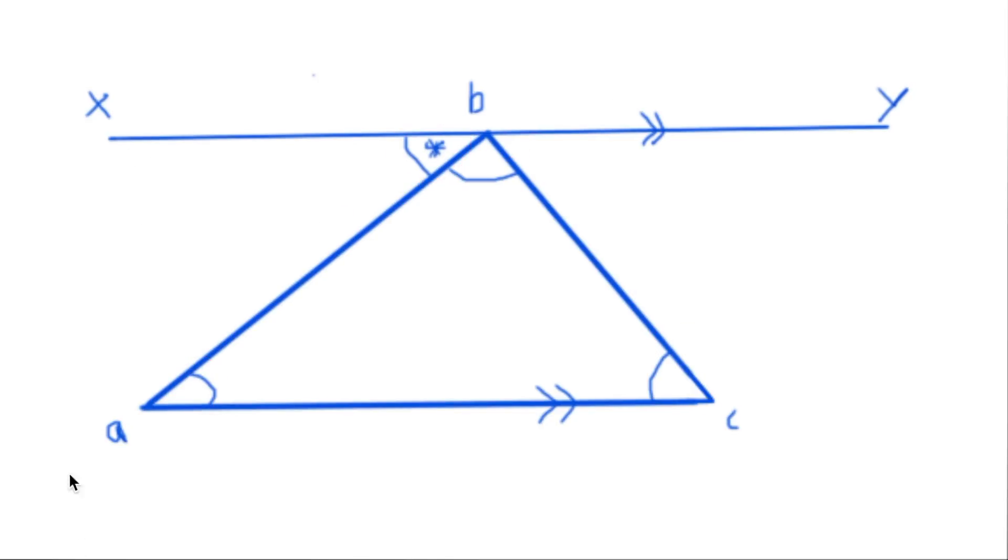Because we know all angles within a triangle add up to 180 degrees, and all angles on a straight line are also 180 degrees, then angles ABC, ABX, and CBY will also add up to 180 degrees.